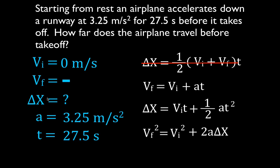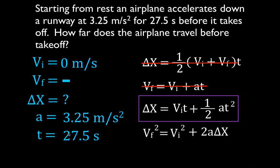We're looking for an equation that has delta x. Does the second equation have delta x? No, so we cannot use that. Now the third equation has delta x. Do we know the other three variables? Do we know the initial velocity? Yes. Do we know the time? Yes. Do we know the acceleration? Yes. Therefore, this is the equation we're going to use.